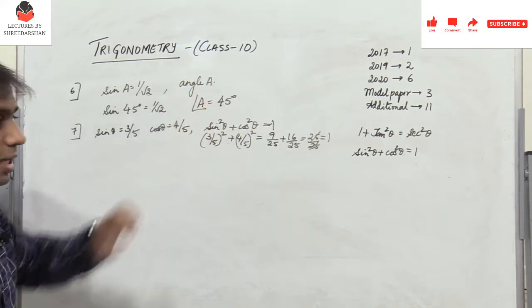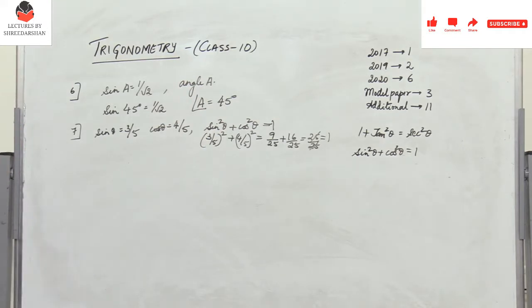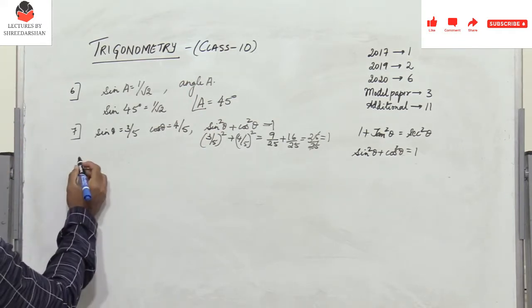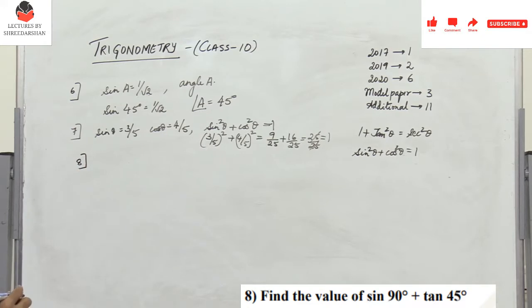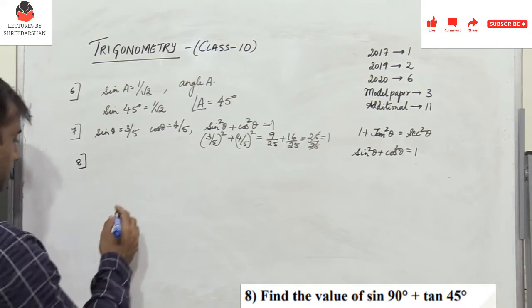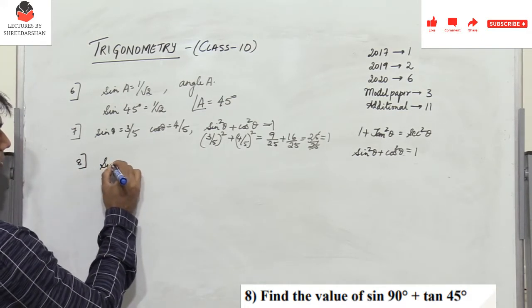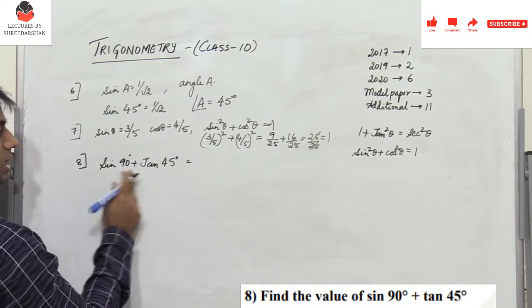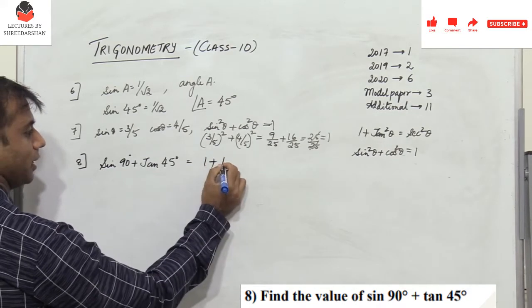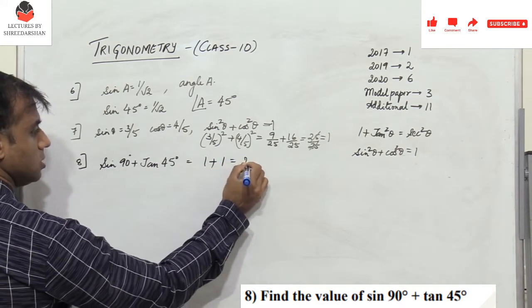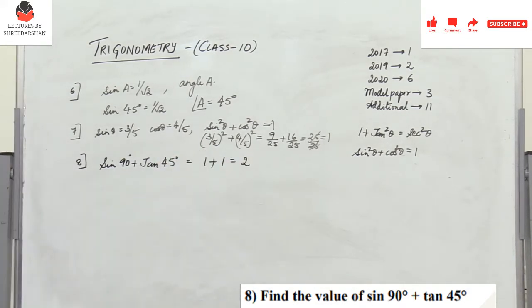Problem 8: what is sin90° + tan45°? We know sin90° = 1 and tan45° = 1, so 1 + 1 = 2. Very easy problem.